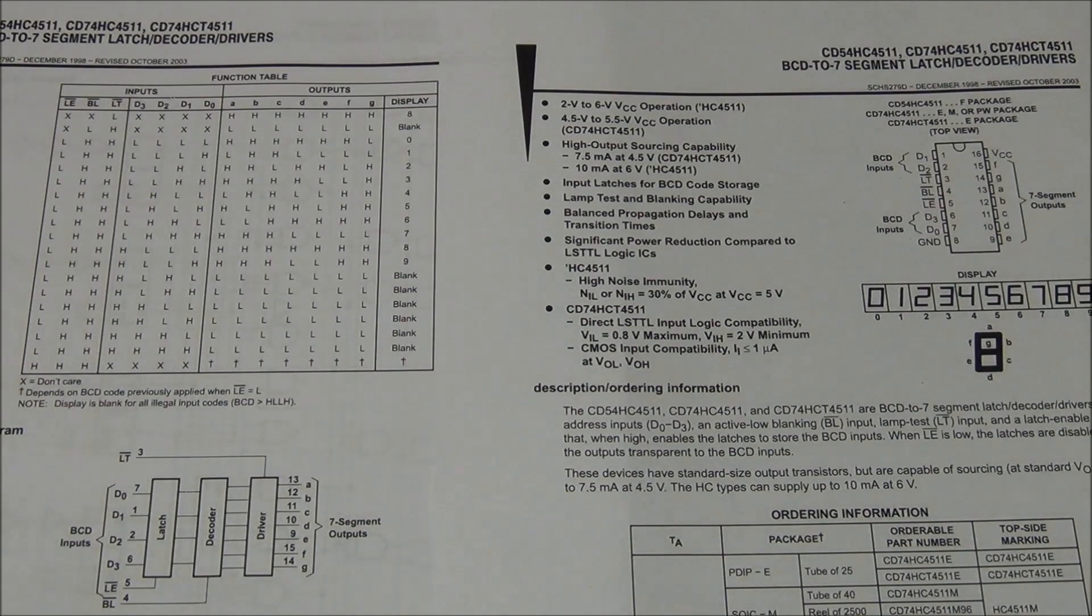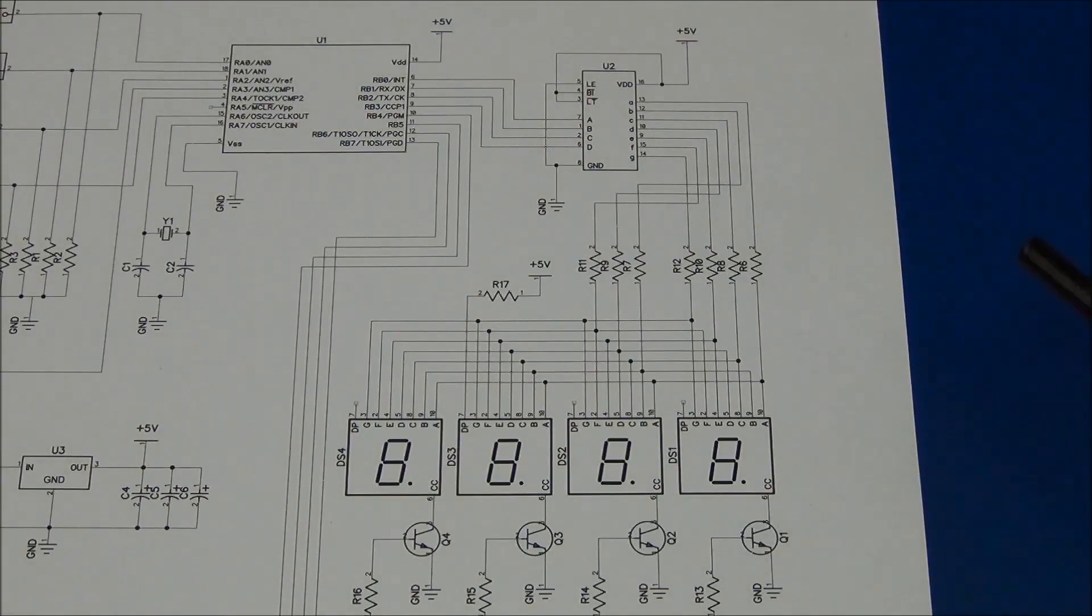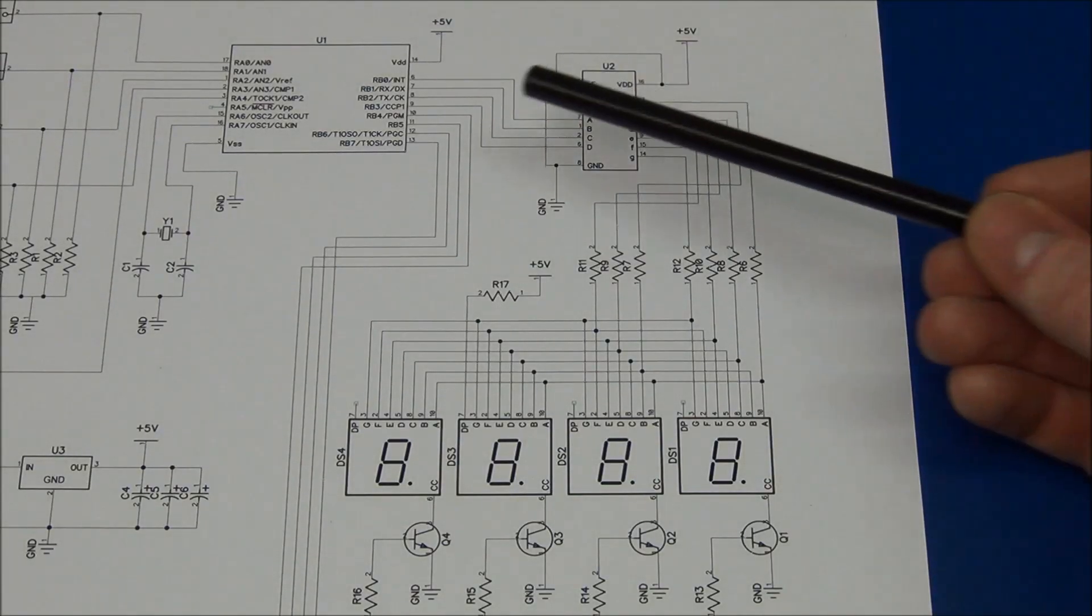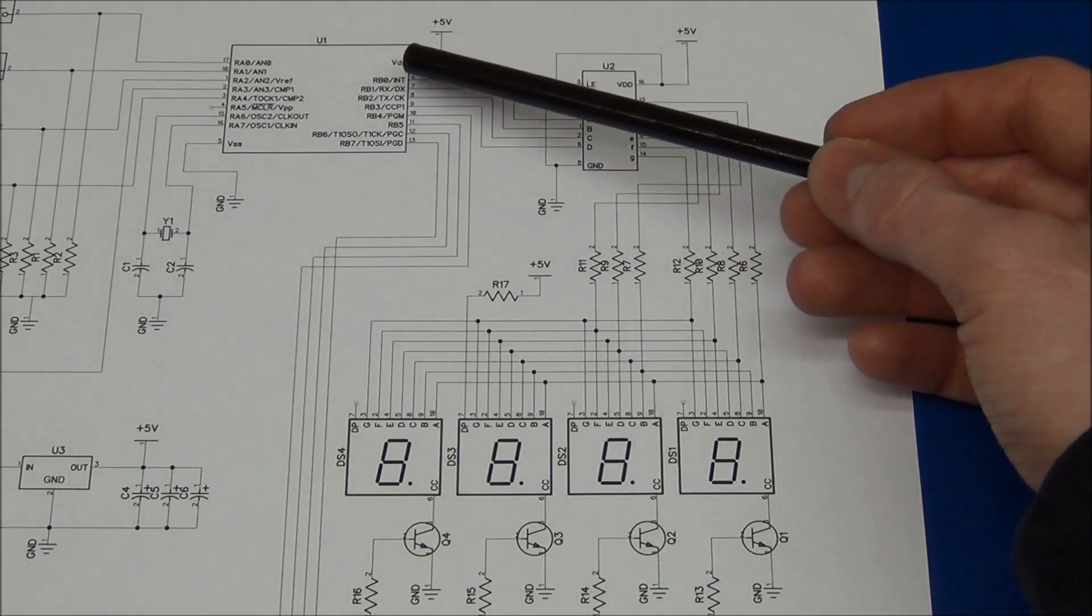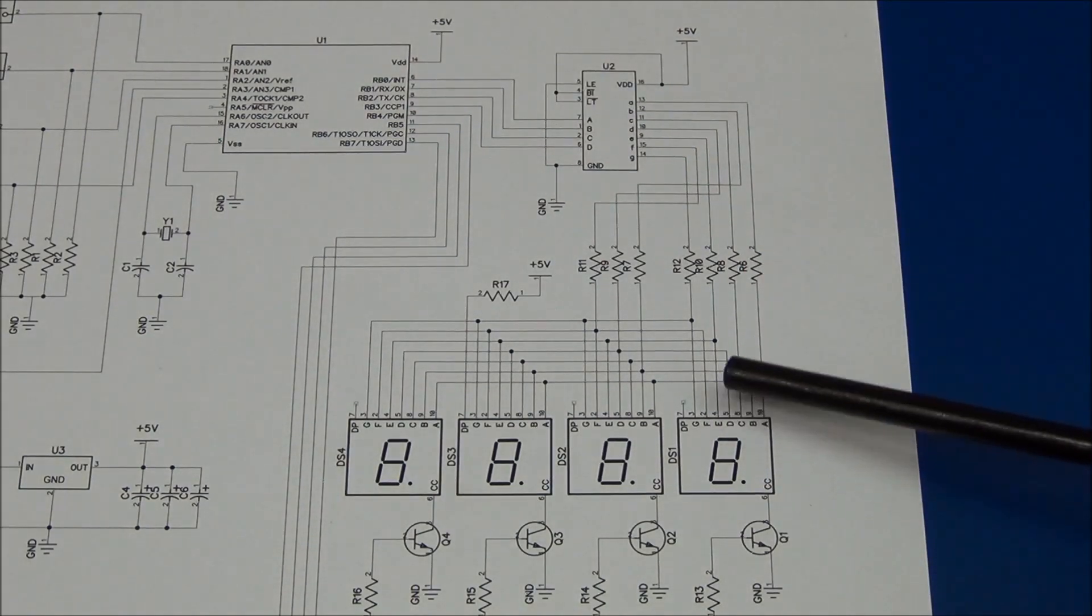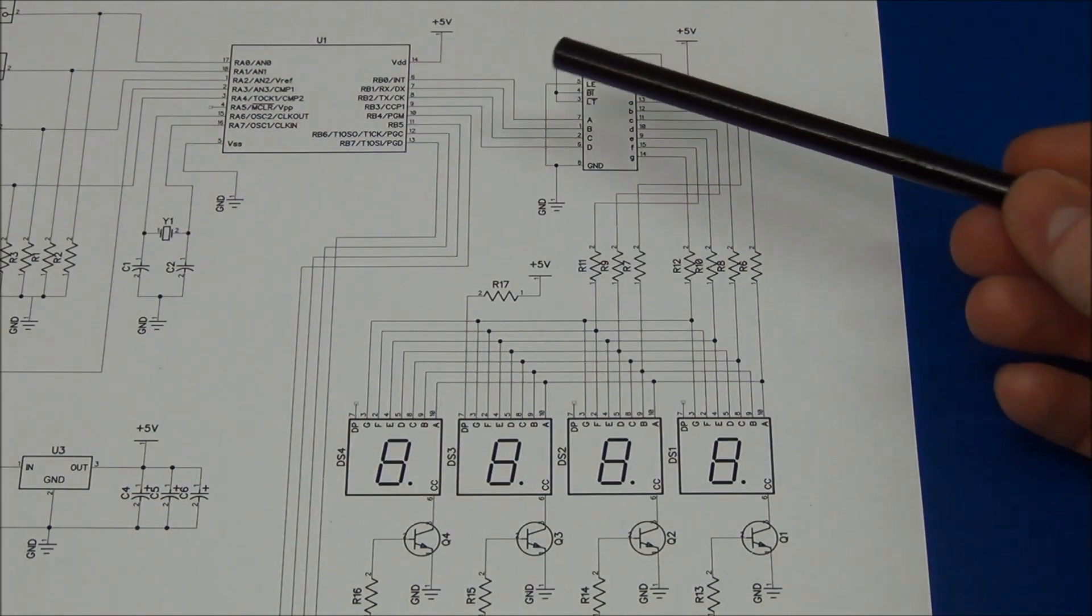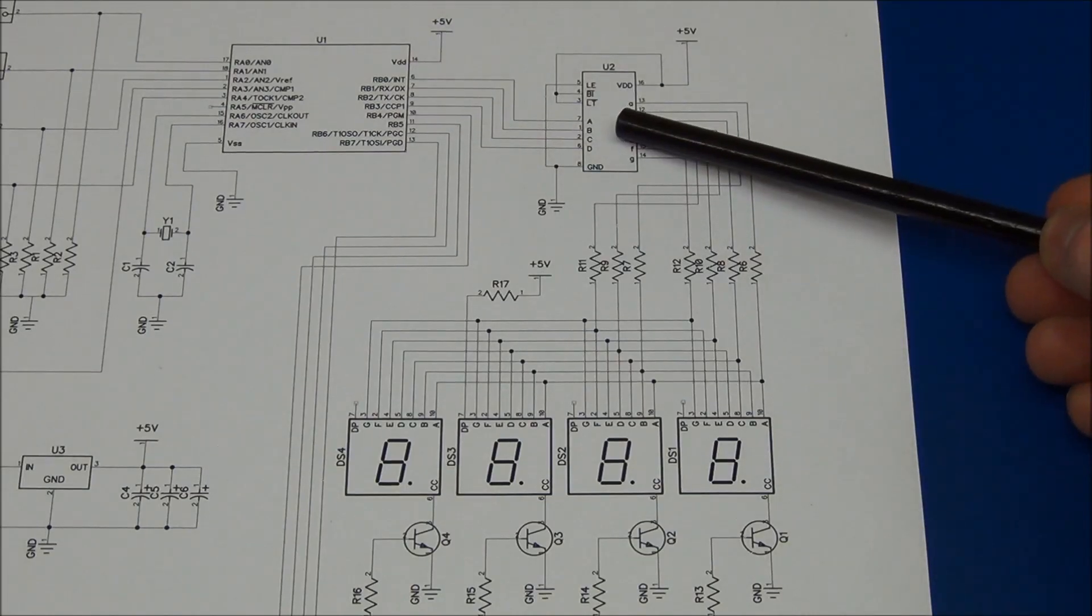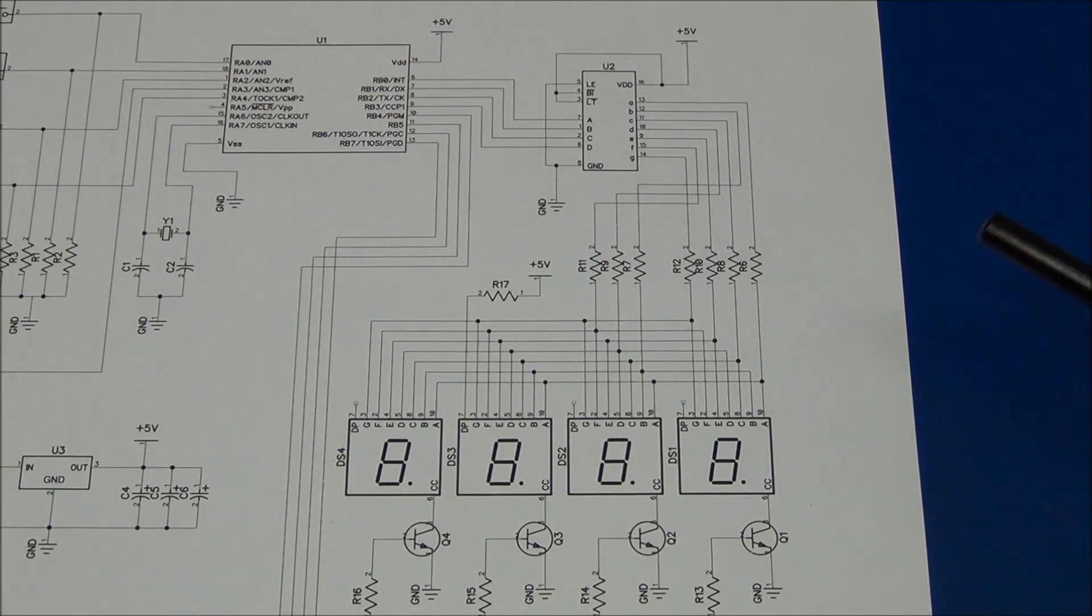So now let's take a look at what we can use this chip for. Well, here is one example. If you have a microcontroller and you simply don't have the seven pins you need to drive the display, you can send the signal into the decoder, and that will drive the display for you.